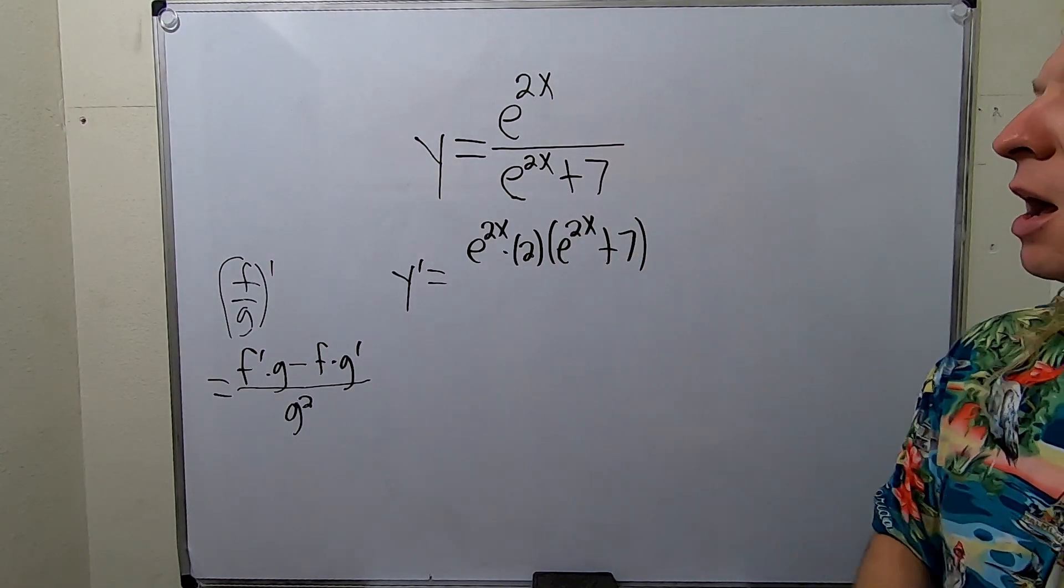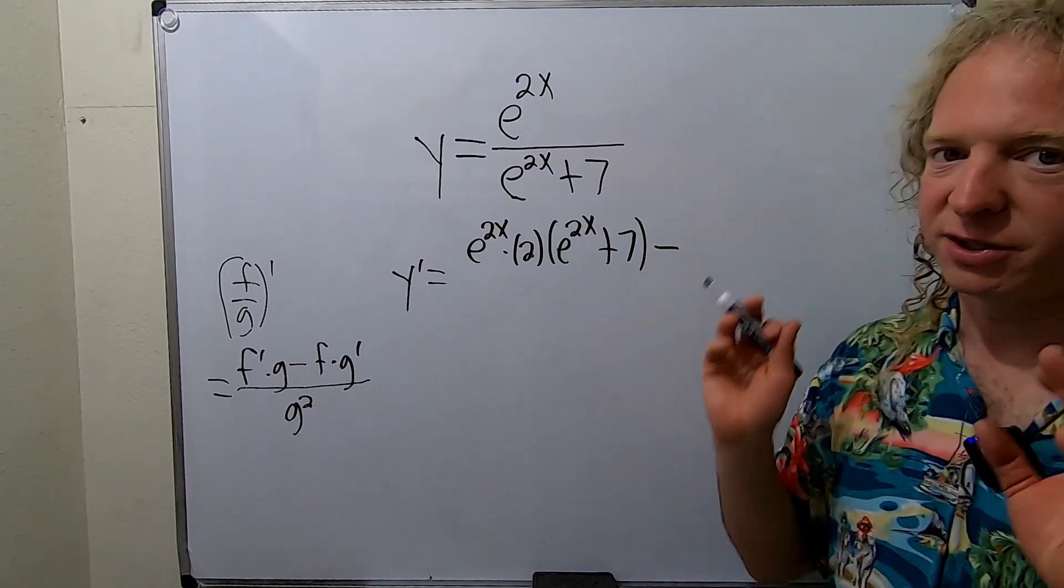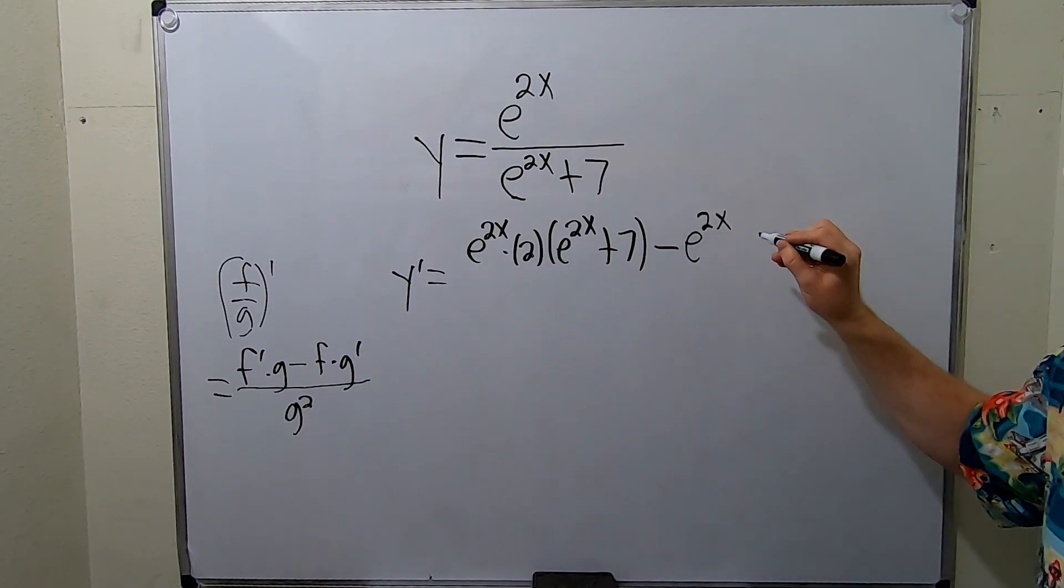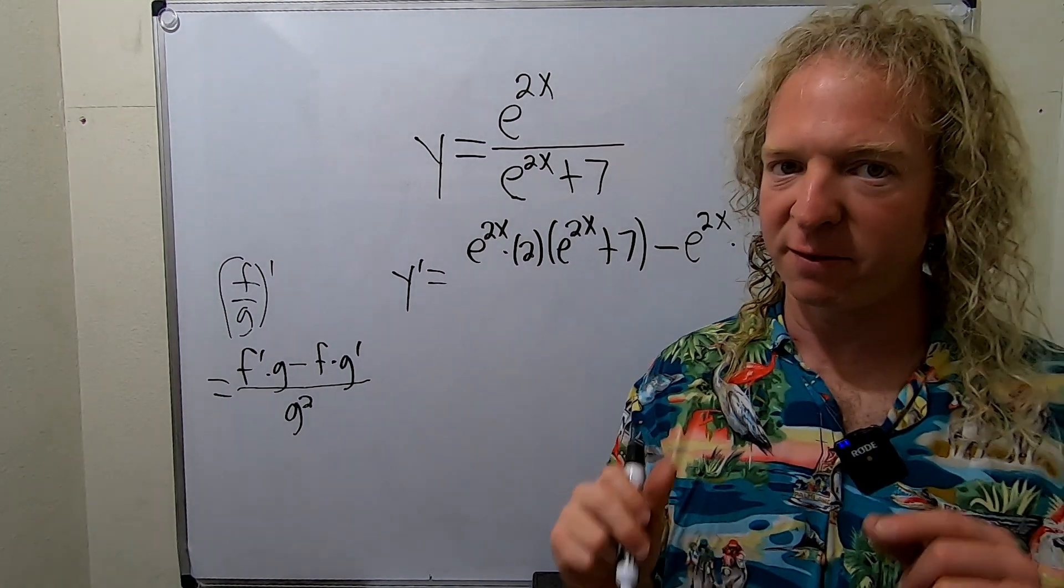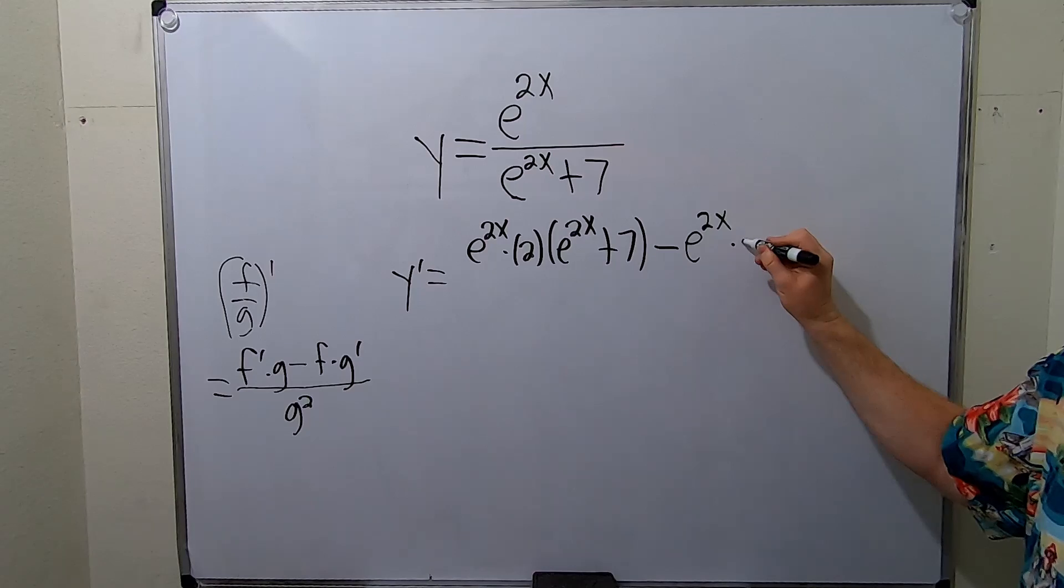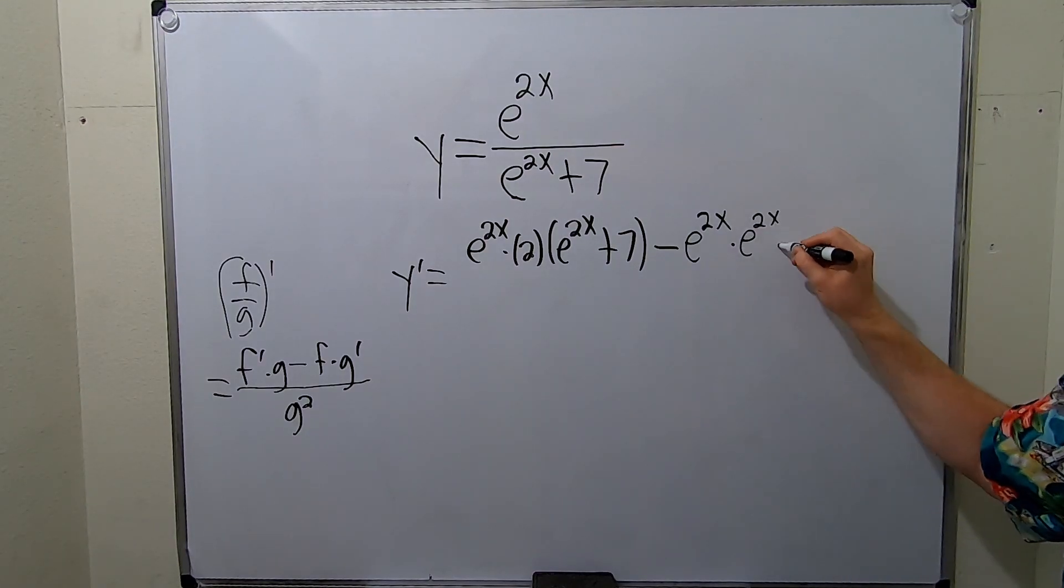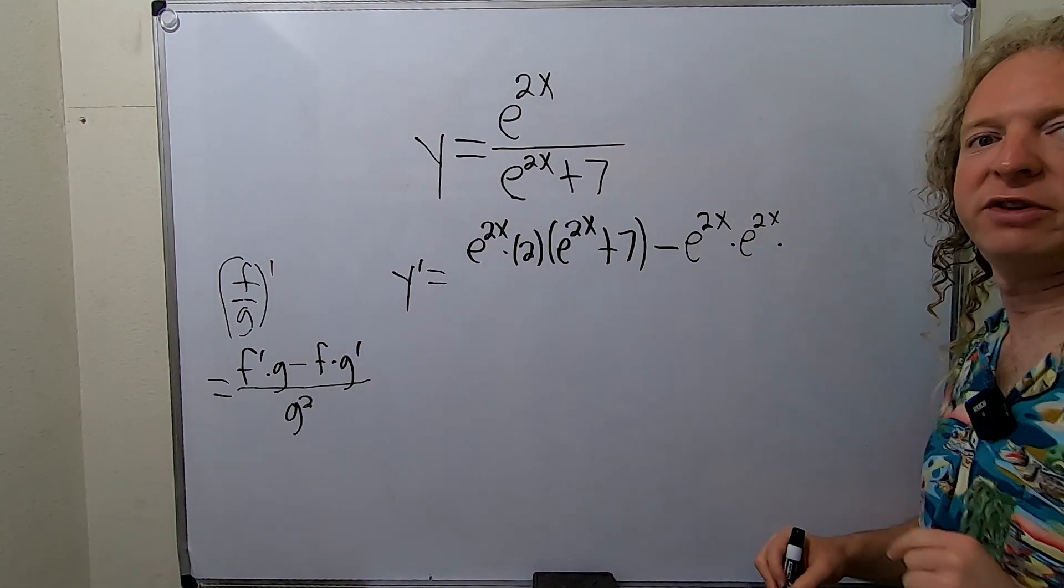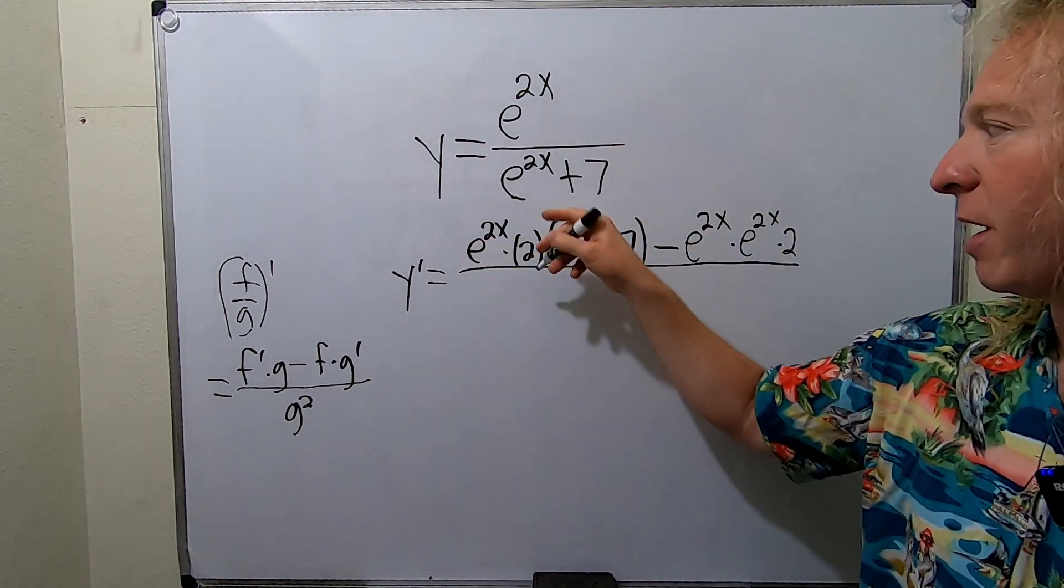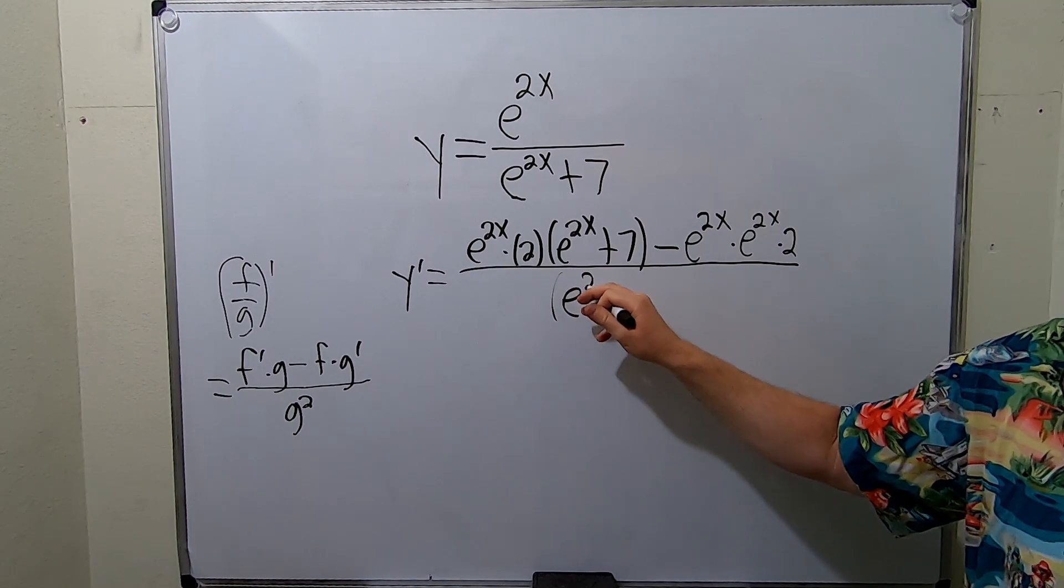Minus the top piece, e to the 2x, times the derivative of the bottom piece. So the derivative of e to the 2x again is e to the 2x times, chain rule, derivative of the inside, 2. The derivative of 7 is 0, so we're good. All over the bottom piece squared.